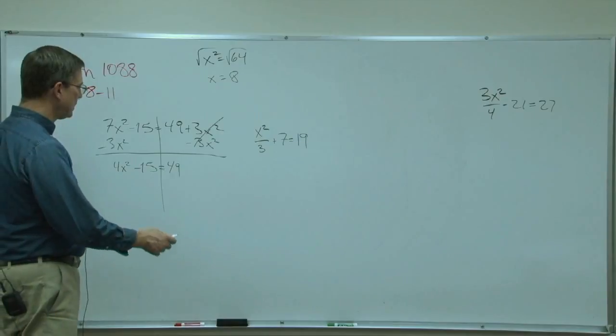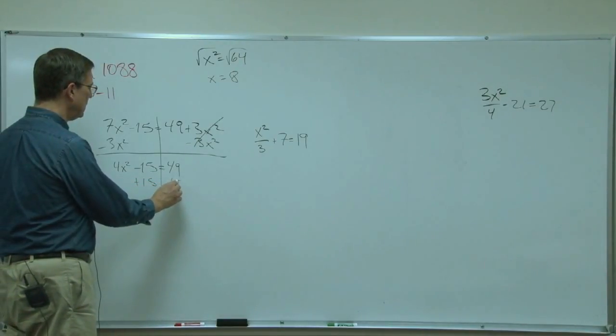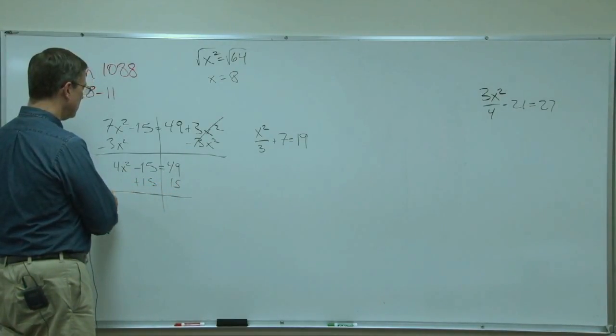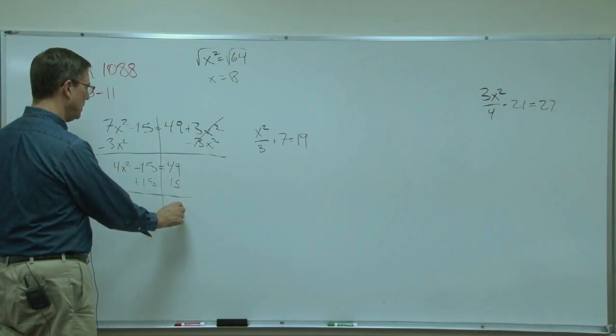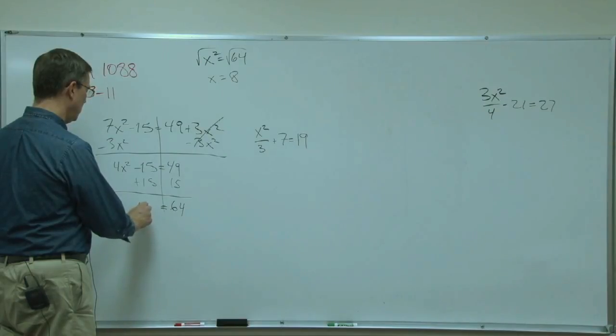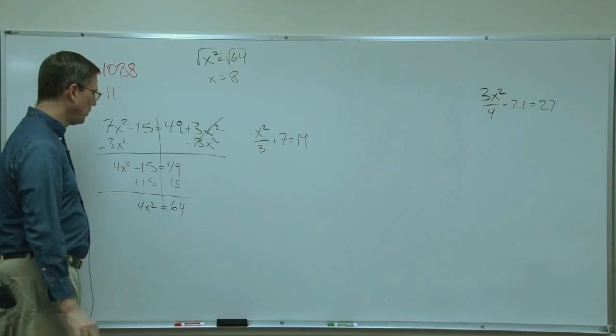So now the next step is we're going to add 15 to both sides. Let's see what we get. 4, carry the 1, 64. So 4x squared equals 64.